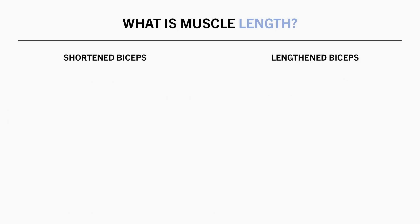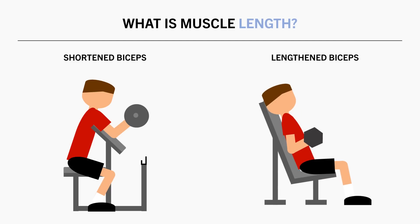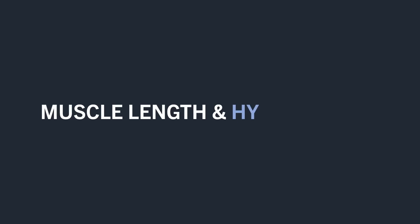Going back to the biceps example, a preacher curl would on average put the biceps in a more shortened position compared with an incline seated dumbbell curl. This is because the shoulder is in a more flexed position during the preacher curl, while it is more extended in the seated incline dumbbell curl. So the next question is: how does muscle length influence hypertrophy?